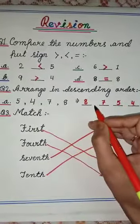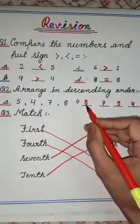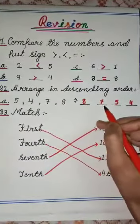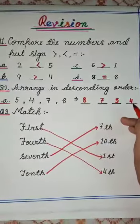So this is how in descending order we arrange numbers from the biggest number moving on to the smallest number. Okay children.